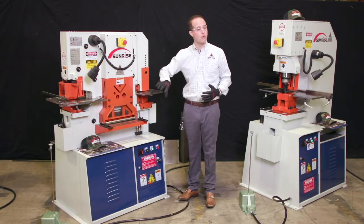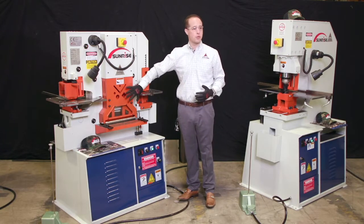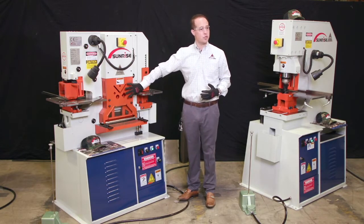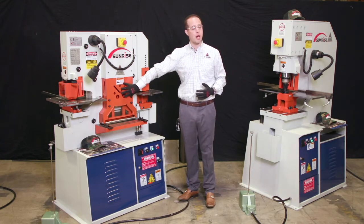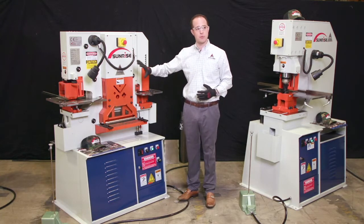This section is also removable and you can put in other items. Unistrut, I-beam, channel. Those are all available options for shearing on this style machine.